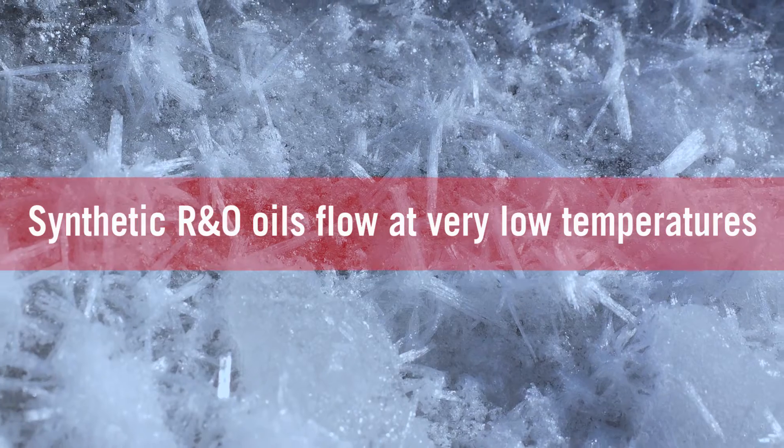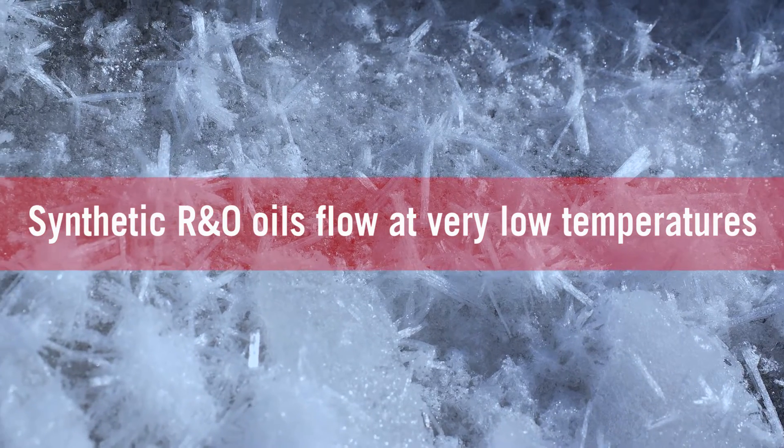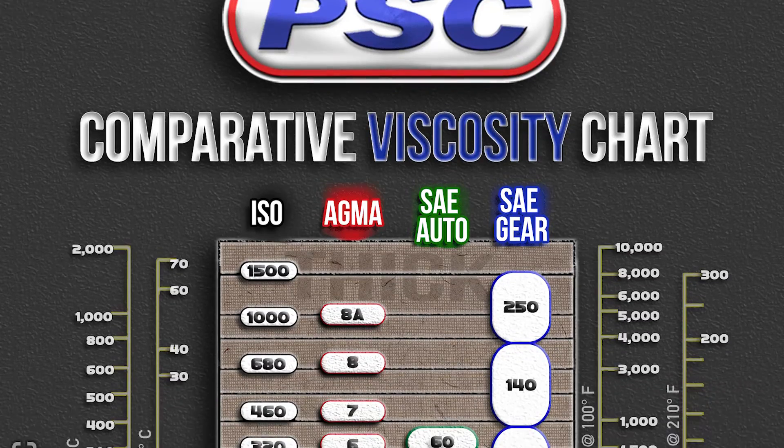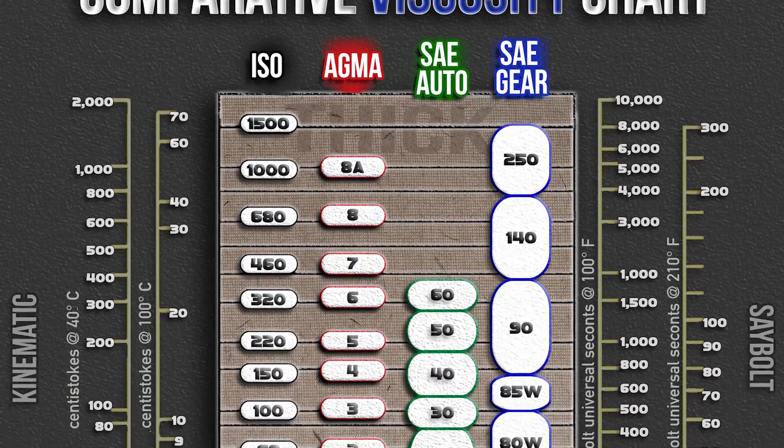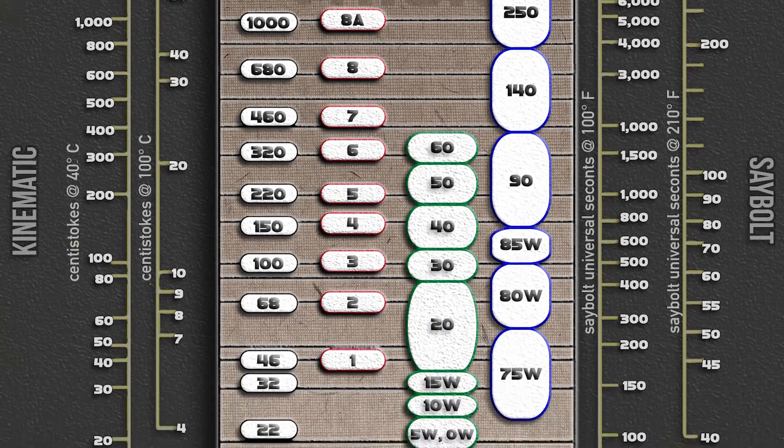Another reason is the pour points — the pour points of synthetics are a lot better. It might be a cold climate, or even an operation in a freezer application where they have pumps and equipment running inside a freezer. In the food industry we run into this a lot, where they need a product that can flow at very low cold temperatures. Synthetics do that, thanks to a higher viscosity index — the higher the VI, the better that oil performs across varying cold and hot temperatures.